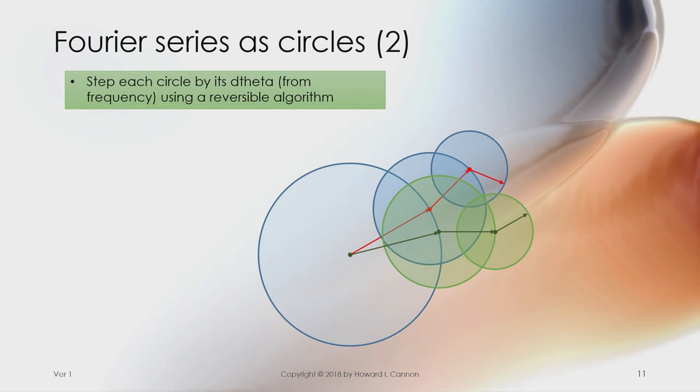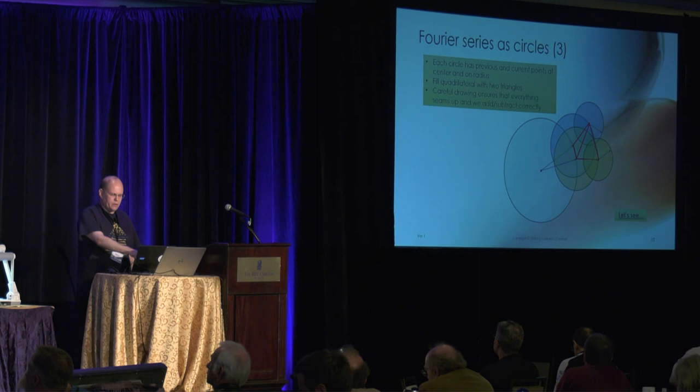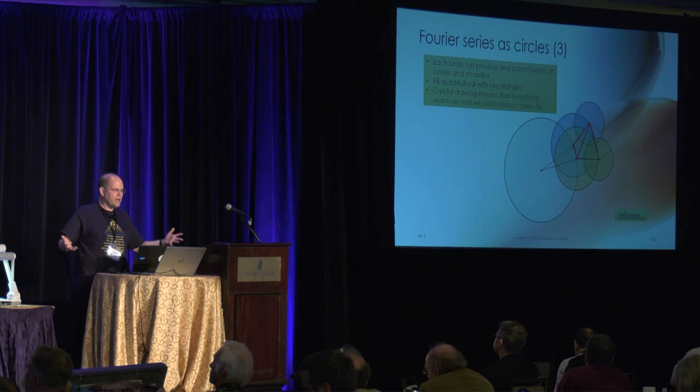And when we do a step, we take some delta theta, it doesn't really matter, some step size, we step them, and what we get in here is this quadrilateral. And of course we can divide that up into two triangles, and now we have, we happen to have this nice careful triangle drawer, which will allow us these, all these things will just naturally seam up for us.